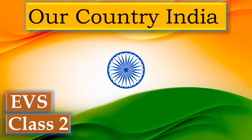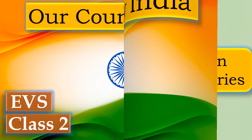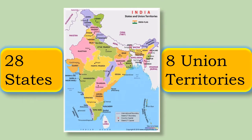Hello kids, welcome to our Blueberry Kids channel. In this video we are going to learn about our country India. This is our country India map. India is divided into 28 states and 8 Union territories.